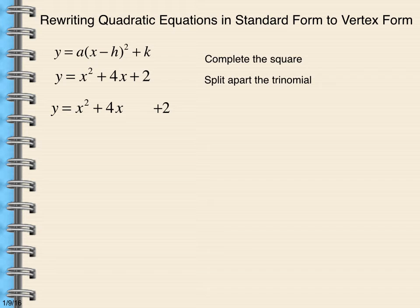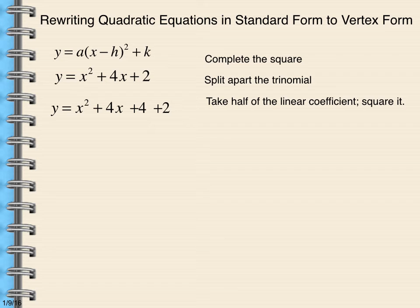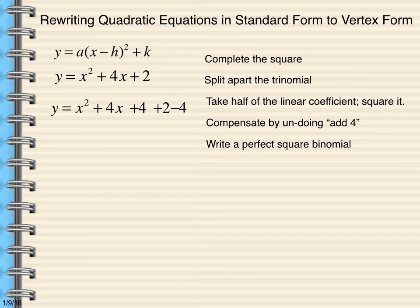What I want to do is take half of my linear coefficient and square it. My linear coefficient is 4. Half of 4 is 2. 2 squared is 4. So I'm going to add 4. Now I have a perfect square trinomial. But I can't just add 4 to something. I have to compensate by undoing add 4. So I'm going to subtract 4. Now my first three terms, I can write those terms as a perfect square binomial. I can combine my constant terms. 2 minus 4 is negative 2.